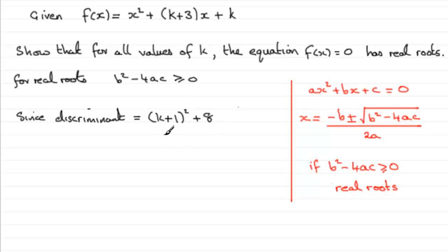because we can see that whatever we've got here, since it's squared, it's bound to be positive. So since the discriminant equals this, and (k+1)² ≥ 0 for all values of k,